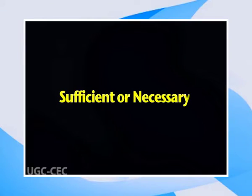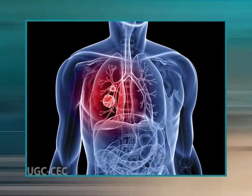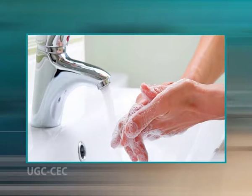A cause could be sufficient or necessary. A cause is termed sufficient when it certainly produces or initiates a disease. It is not usually a single factor but often comprises several components — for example, cigarette smoking is one component of the sufficient cause in lung cancer. In general, it is not necessary to identify all the components of a sufficient cause before effective prevention can take place, since the removal of one component may interfere with the action of the others and thus prevent the disease.